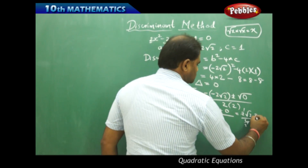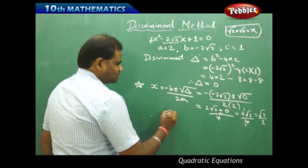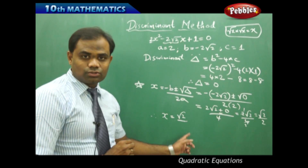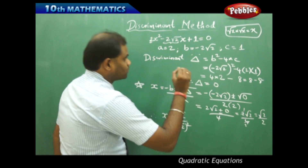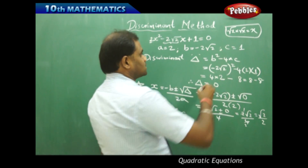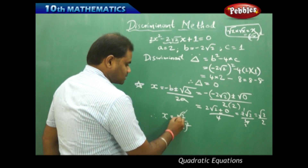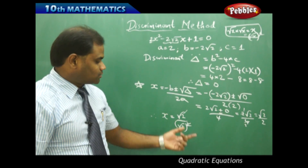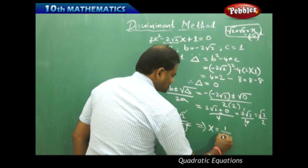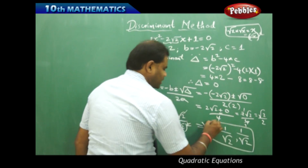Simplifying 2 root 2 over 4 gives root 2 over 2. To simplify further, we write 2 as root 2 whole squared, so that one root 2 in the denominator cancels with the root 2 in the numerator. This gives the required solution for x.